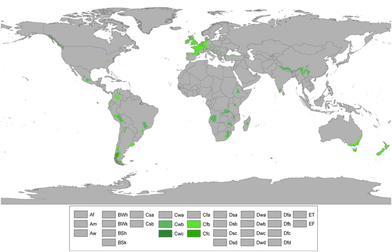Areas with subpolar oceanic climates feature an oceanic climate but are usually located closer to polar regions. As a result of their location, these regions tend to be on the cool end of oceanic climates. Snowfall tends to be more common here than in other oceanic climates. Subpolar oceanic climates are less prone to temperature extremes than subarctic climates or continental climates, featuring milder winters than these climates. Subpolar oceanic climates feature only one to three months of average monthly temperatures that are at least 10 degrees Celsius, and none of its average monthly temperatures fall below minus 3.0 degrees Celsius or 0 degrees Celsius depending on the isotherm used.